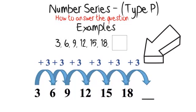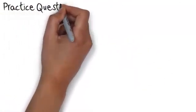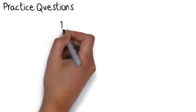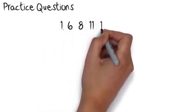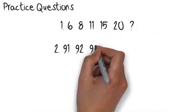The plus three rule does work for all the numbers in the sequence. Now you know the rule, all you need to do is 18 plus 3 to find the missing number. 18 plus 3 equals 21, so the answer to the question is 21.